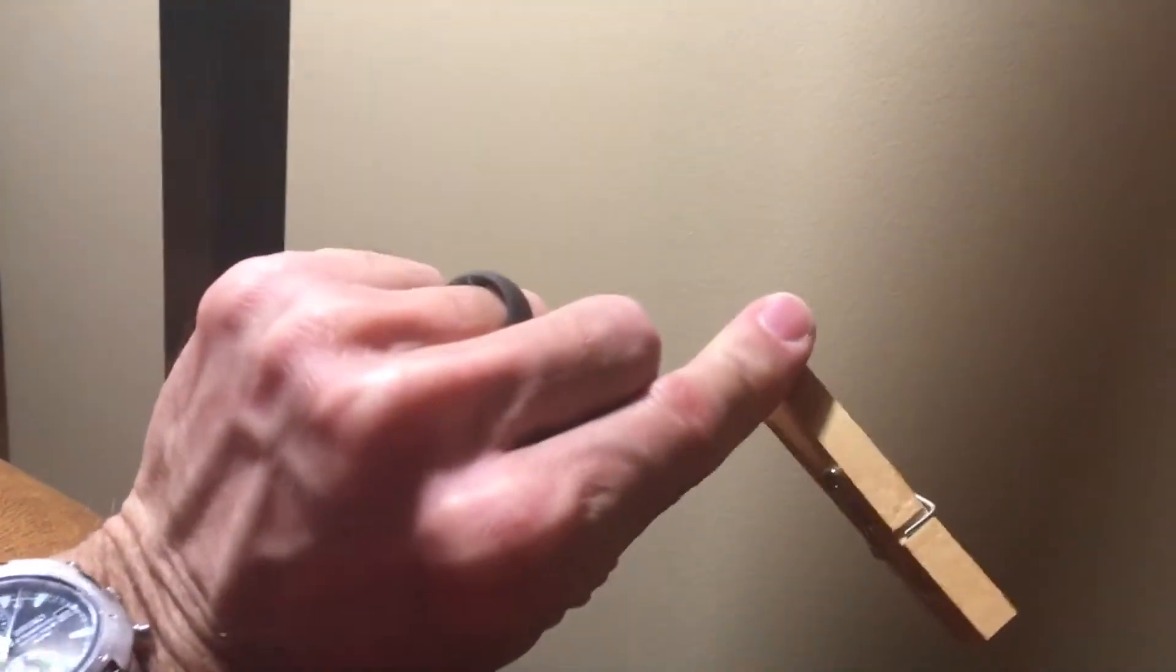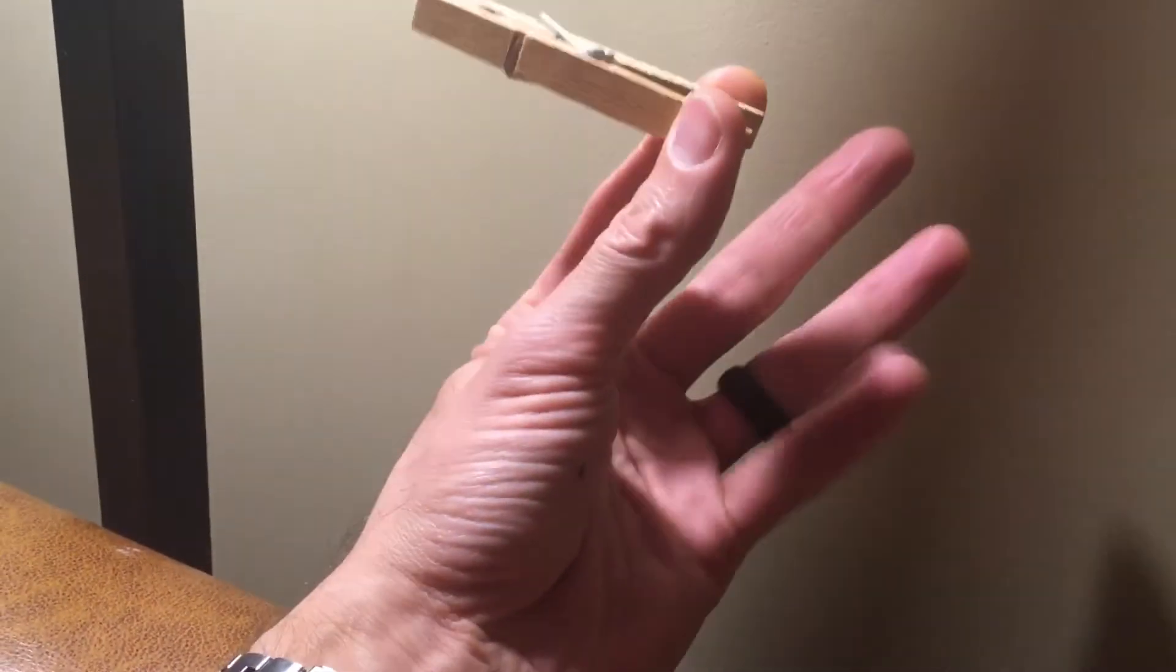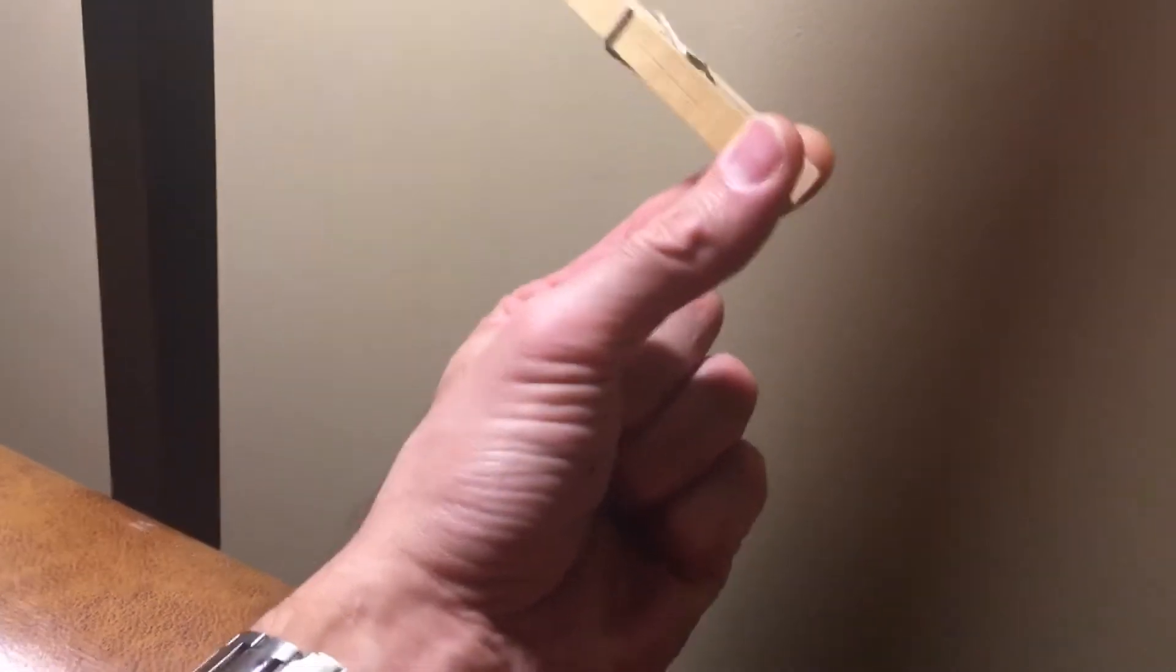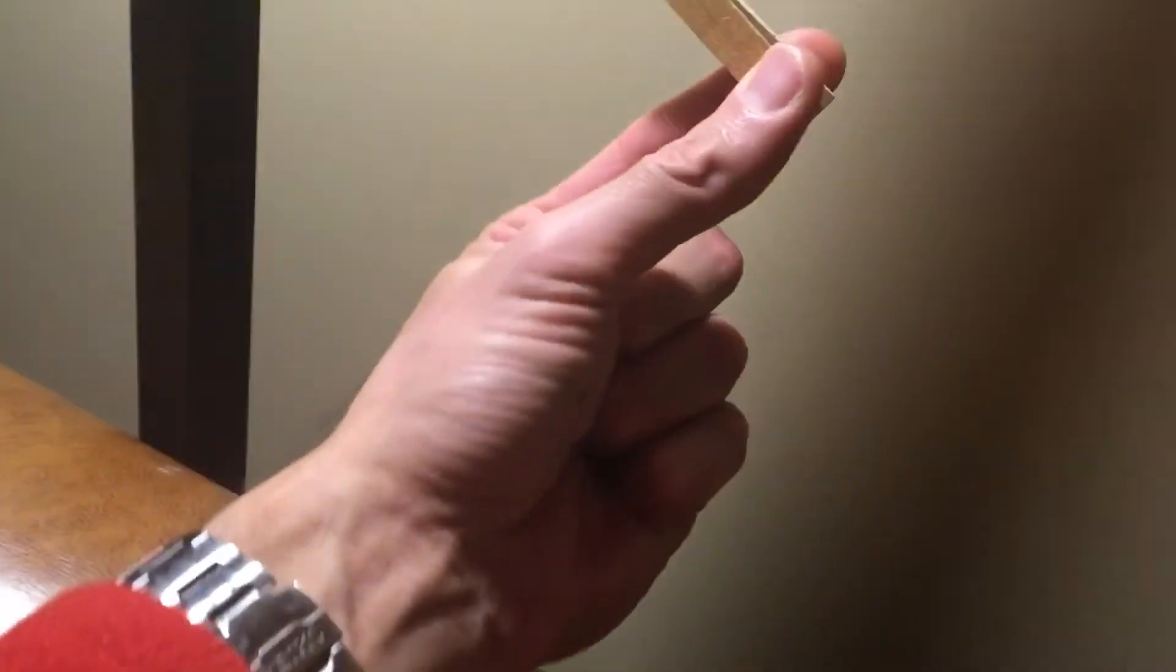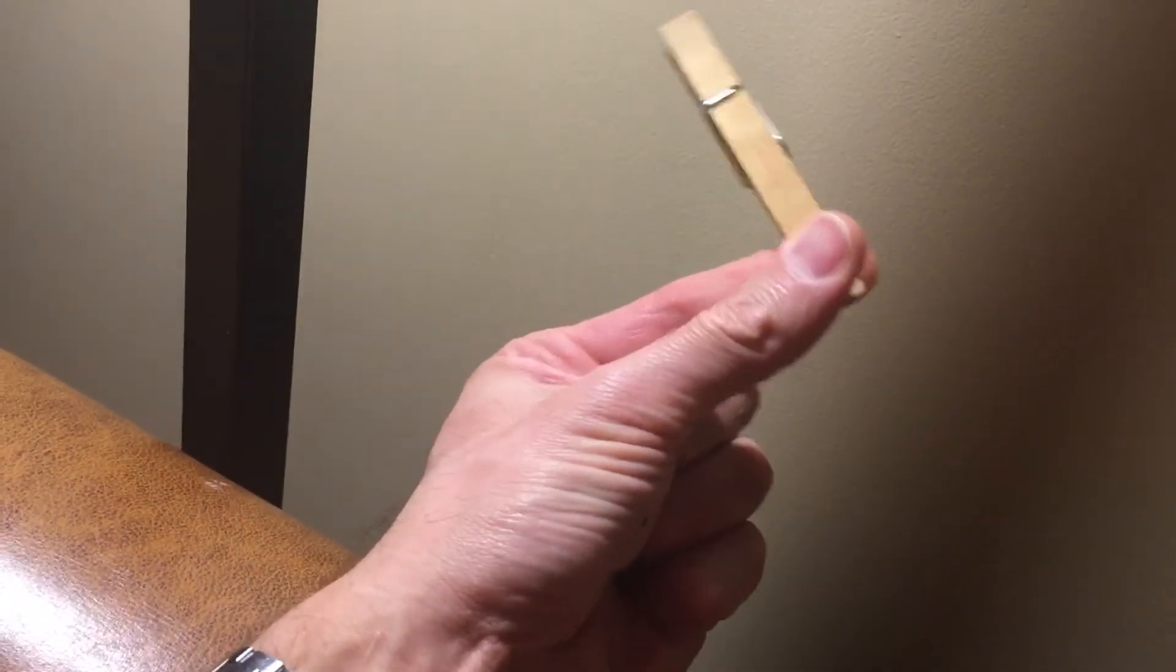Make sure the clothespin is at a right angle to your hand, and your other three fingers should be wrapped tight so just your thumb and index finger are extended. Everything else is wrapped tight, and the clothespin is off to the side.